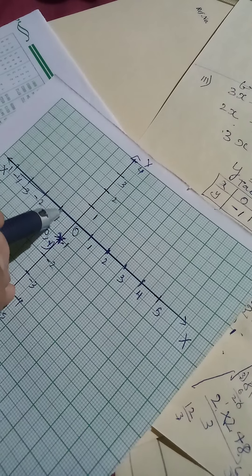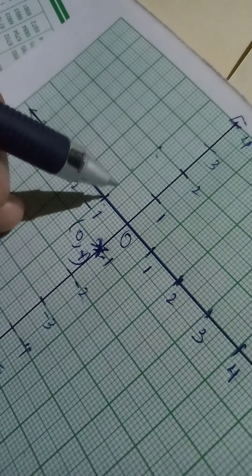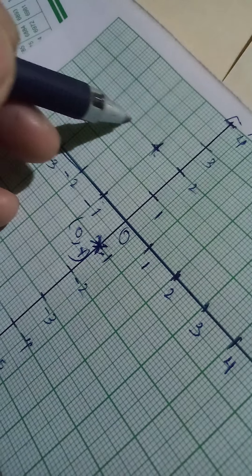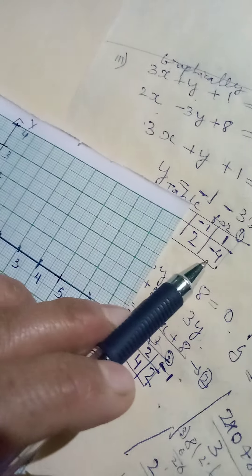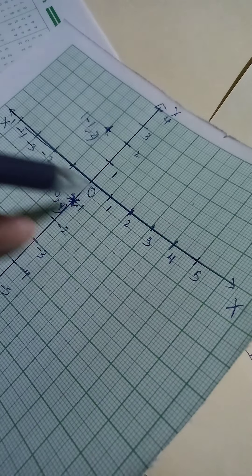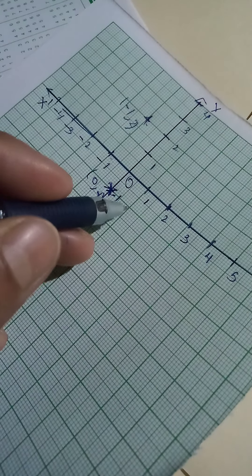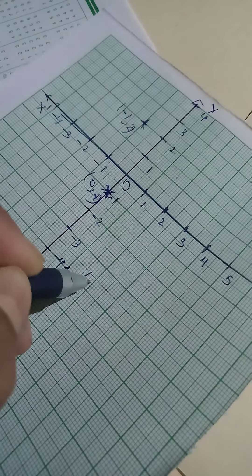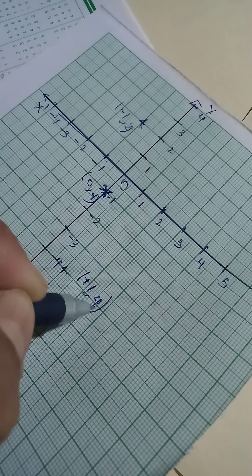So X equal minus 1, Y 2. 2 is positive, so above. So you can mark it there, on this line of minus 1, you mark 2. So here we have minus 1, 2. Then third point we have 1, minus 4. So we go to 1, then minus 4 is down. You mark 1, 2, 3, 4. So here we have 1, minus 4.